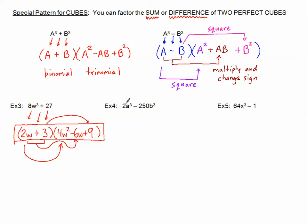Let's move on to example 4. I see a binomial — alarms going off in my brain. I know there's a special pattern going on. This is a difference, but something's weird. It's definitely not a difference of two perfect squares because 2 is not a perfect square. But it's not a difference of two perfect cubes either because 2 is not a perfect cube — the cube root of 2 is some decimal. However, I see a 2 and 250 — they're both even numbers, so there's a GCF. Always train yourself to look for a GCF. I can pull a 2 out, leaving a cubed — a perfect cube — and 2 goes into 250 125 times — also a perfect cube, along with b cubed. So once I pull out the GCF, I do have a difference of two perfect cubes and I can factor that.